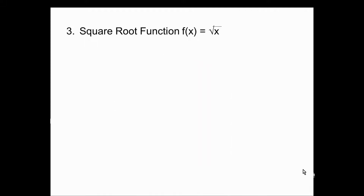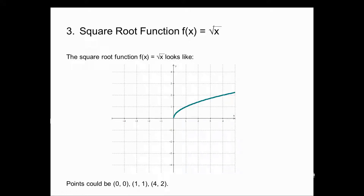Our third basic function: the square root function, f(x) = √x. Remember, we cannot take the square root of negative numbers, so this is only valid for x ≥ 0, and the graph only goes in the positive direction. I plotted the points (0, 0), (1, 1), and (4, 2). It's the top half of a parabola on its side, with domain x ≥ 0 and range y ≥ 0.